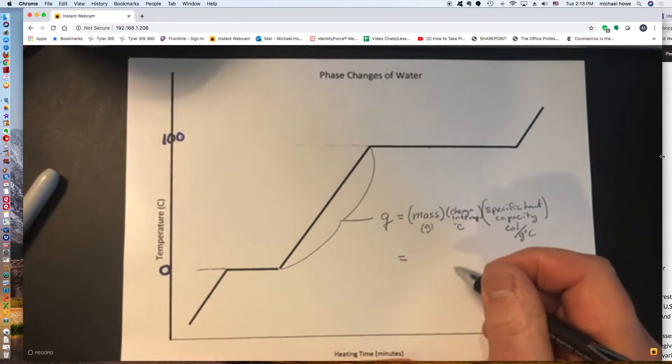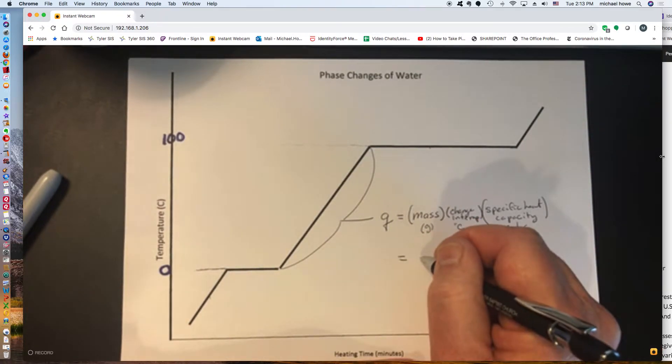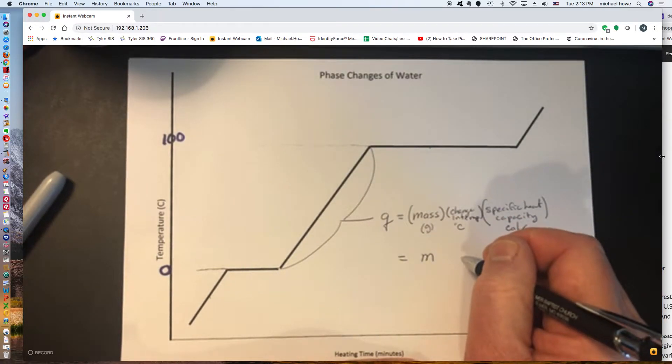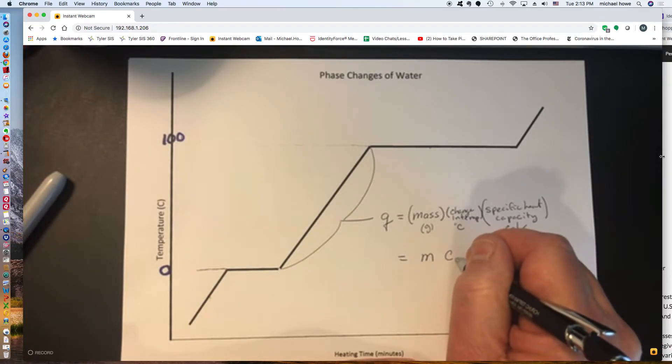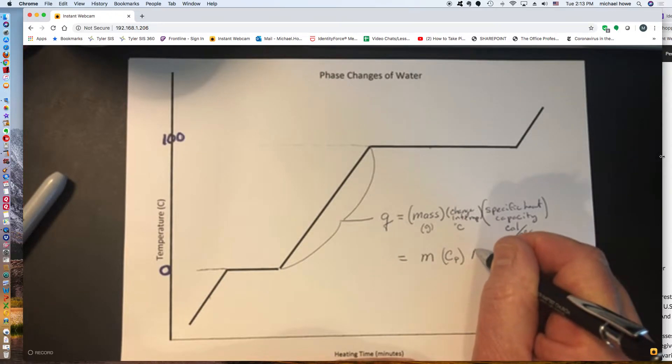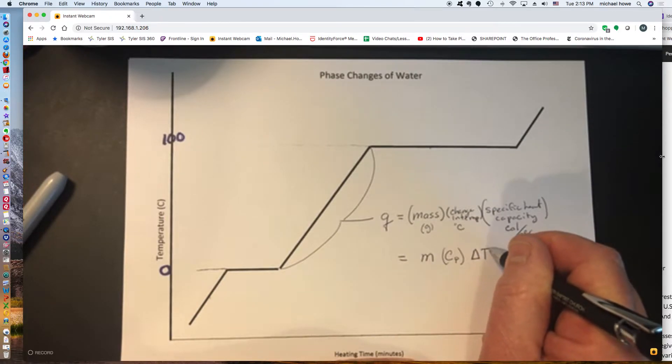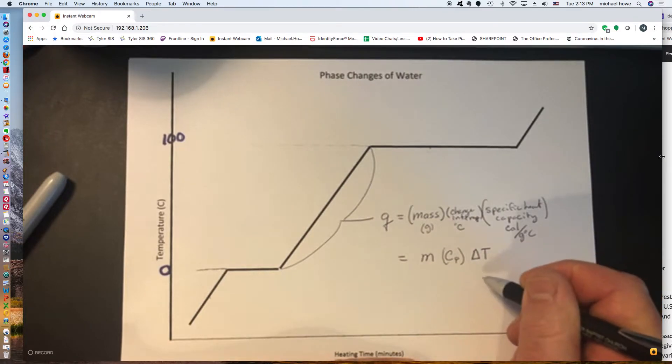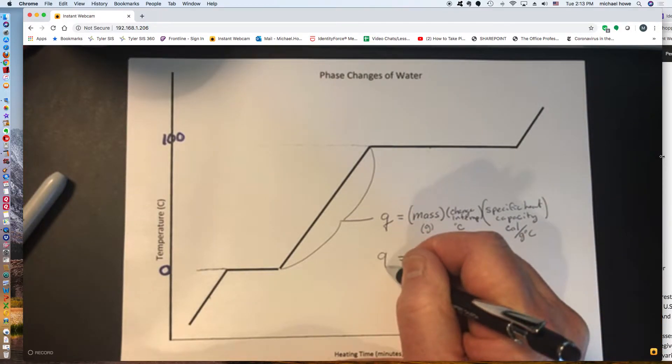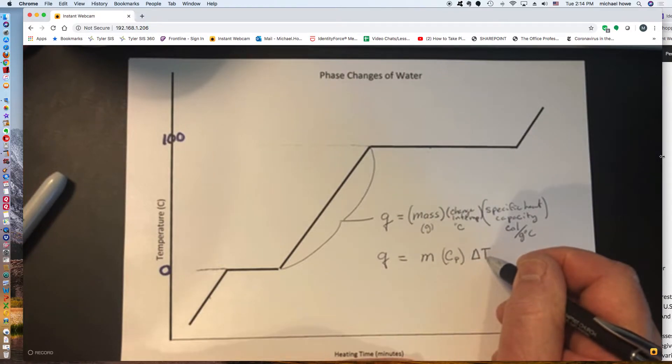All right, to shorten the formula, we'll represent mass as M. Usually you see the specific heat capacity written secondly, which would be Cp. So once again, Cp is the symbol that we're going to use for specific heat capacity. And the third term is delta T. Delta is this triangle. It's a capital Greek letter, and it means change in science. So we're looking at the formula being Q is equal to M Cp delta T.